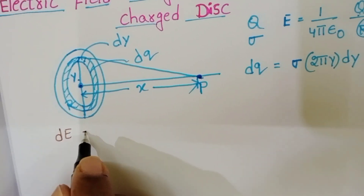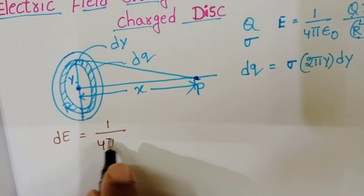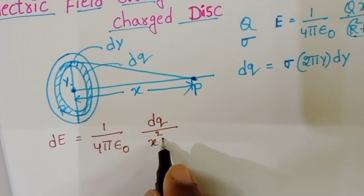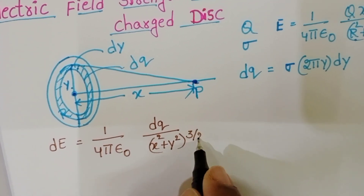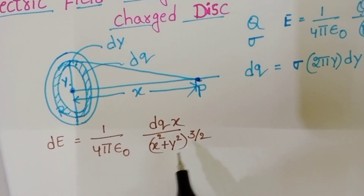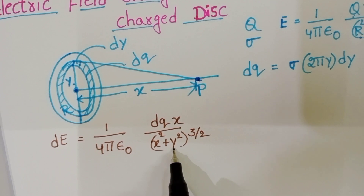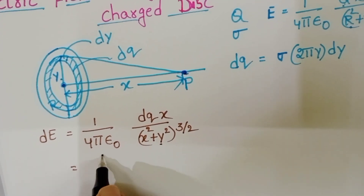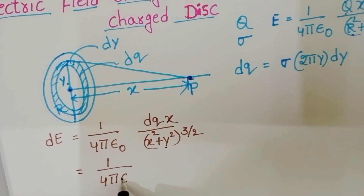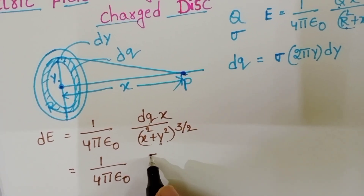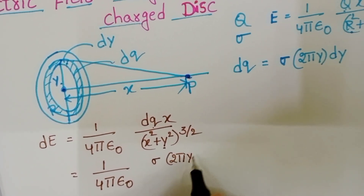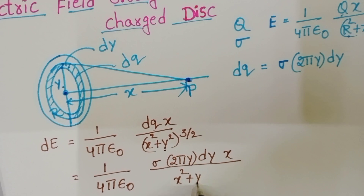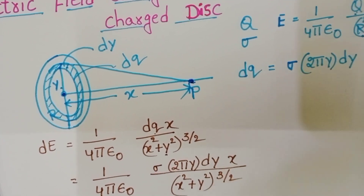The electric field dE equals (1/4πε₀) · dq·x / (x² + y²)^(3/2), because y is the radius of the elemental ring. Substituting dq, this becomes (1/4πε₀) · sigma · 2πy·dy · x / (x² + y²)^(3/2).